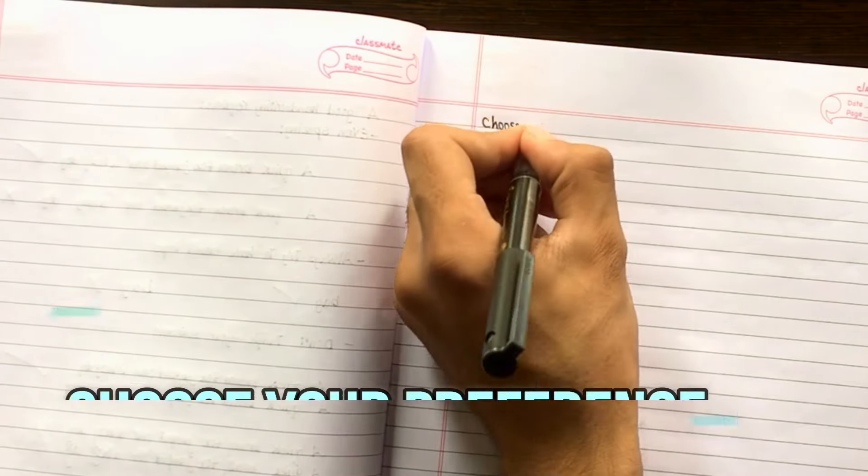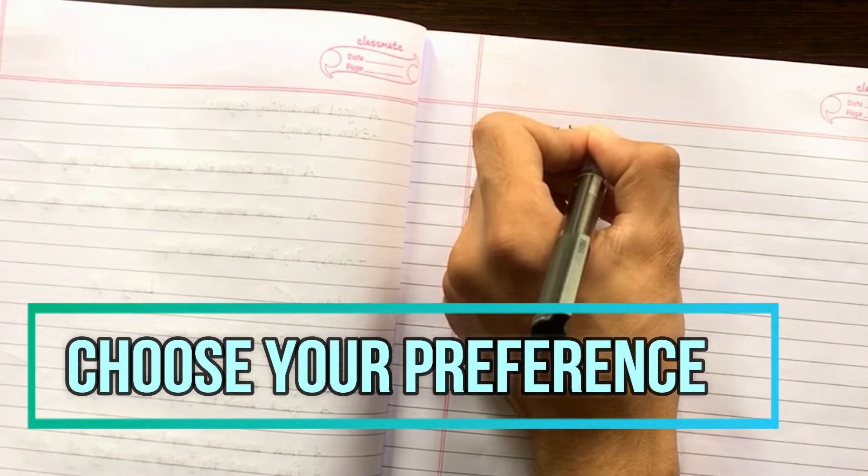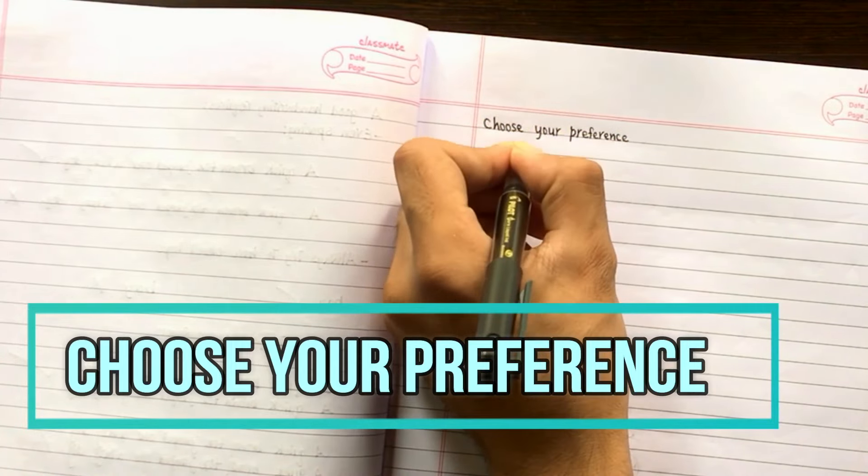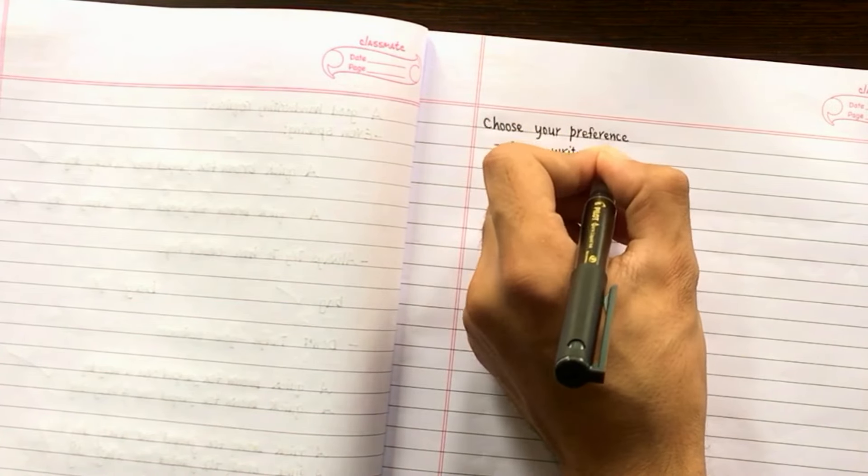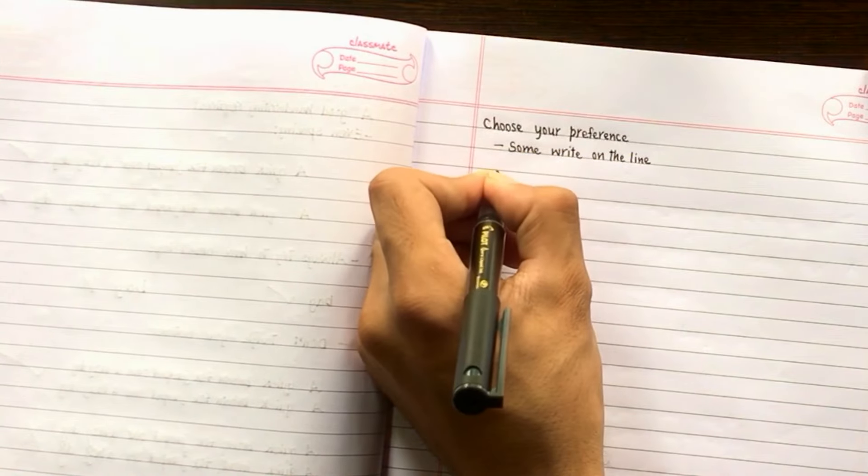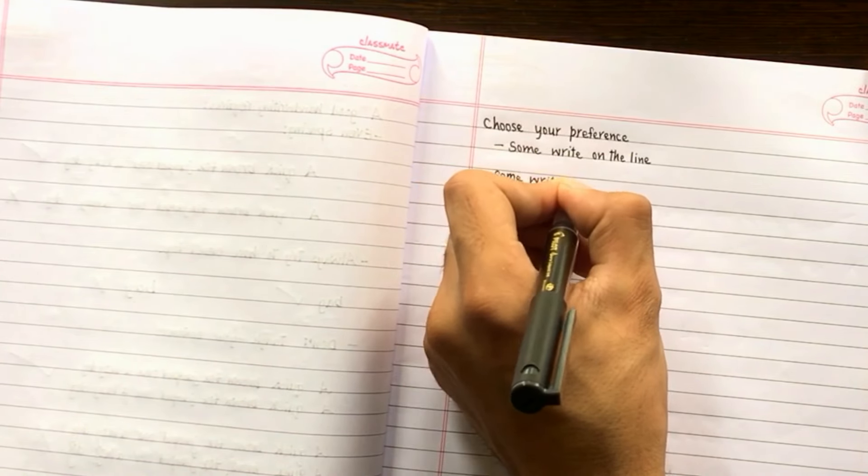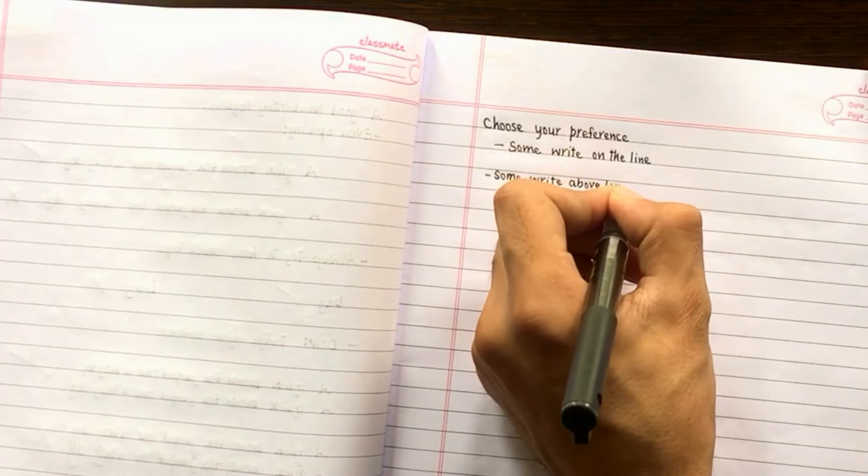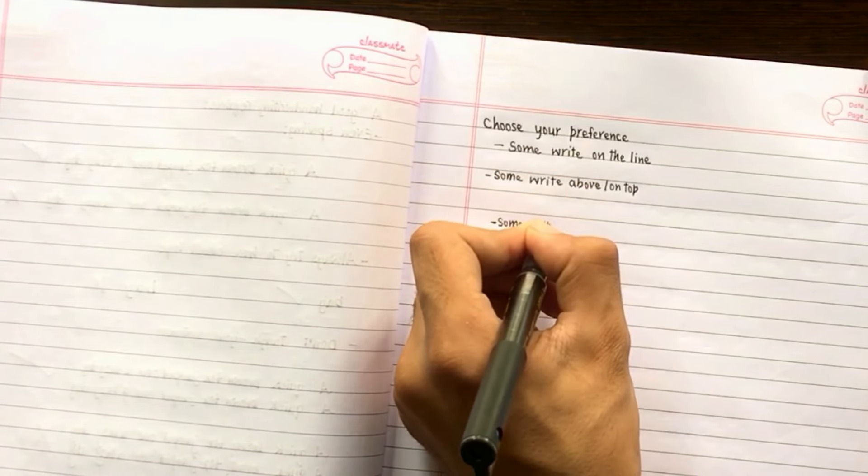Then practice, practice, and practice if you really want to achieve that dream handwriting. Practice and choose your preference—that means you have to choose your preference. Some write on the line, some write above the line, some on the top, and some right in between. Just see what suits you and accordingly work out.